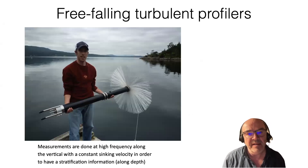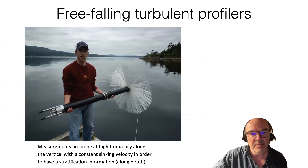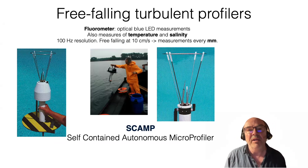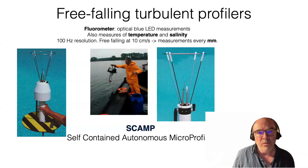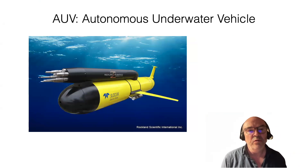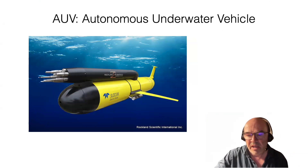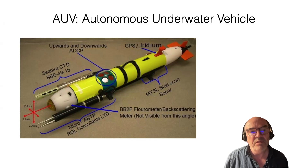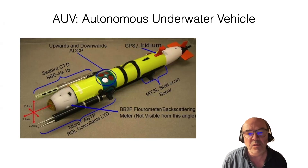Beyond fixed-point measurements, you can also sample vertical profiles. The system shown here makes a vertical profile of different turbulent properties. Another such system is the SCAMP — Self-Contained Autonomous Microstructure Profiler — which makes vertical measurements of temperature or salinity. You can also have Autonomous Underwater Vehicles (AUVs), which are autonomous torpedo-like systems with instruments including GPS for position, ADCP for velocity, and CTD — Conductivity, Temperature, Depth — for salinity and temperature information, as well as a fluorometer. This type of system is really developing at present.